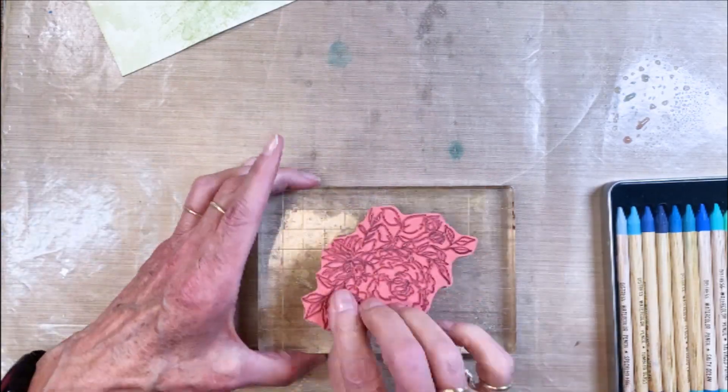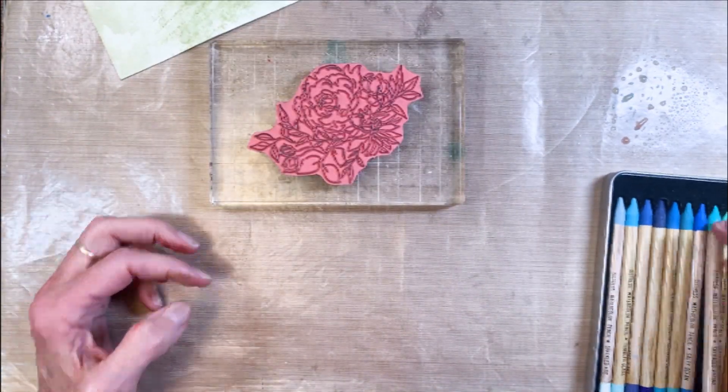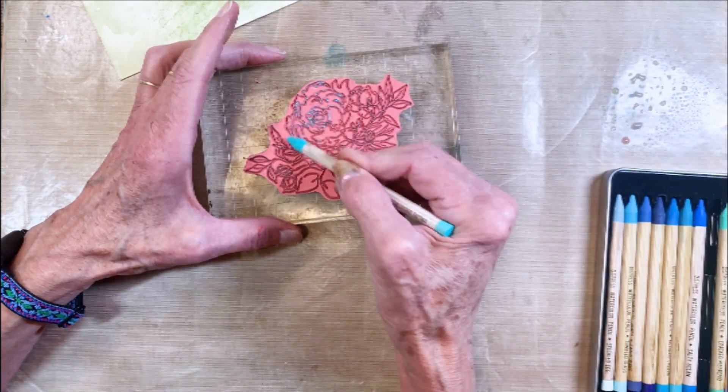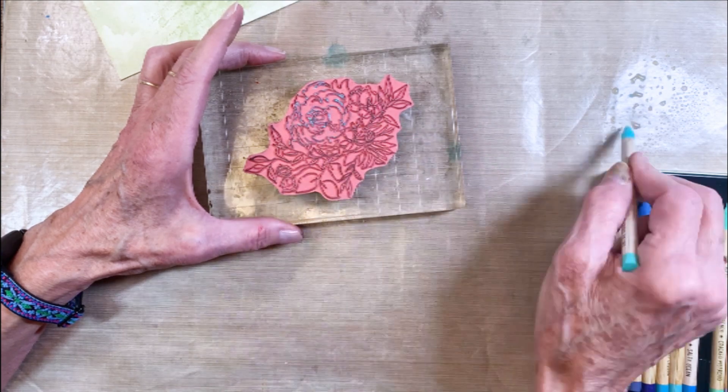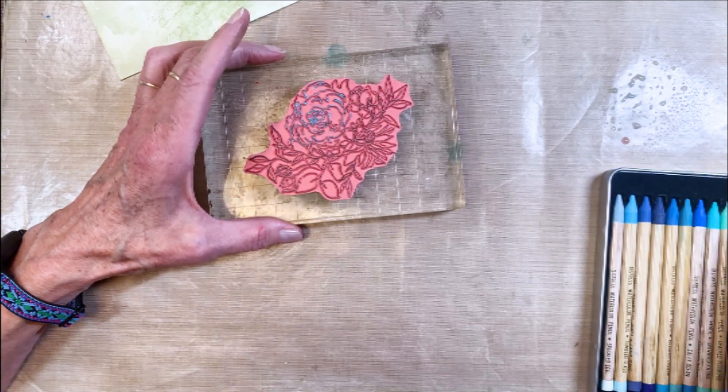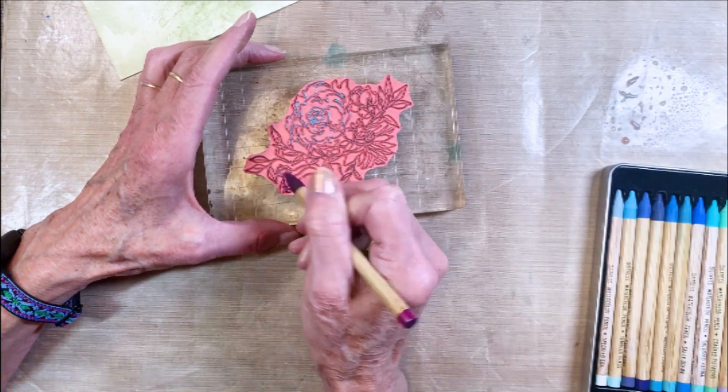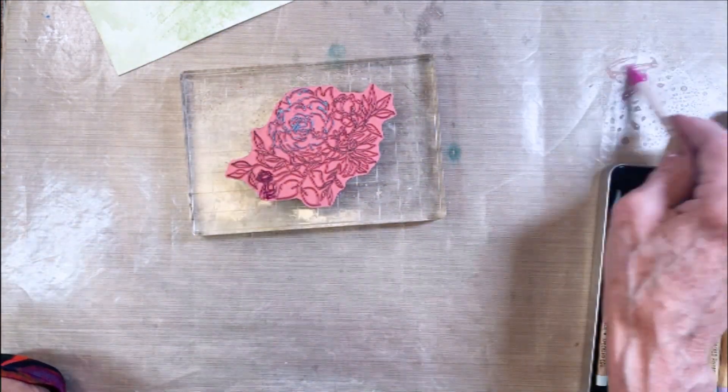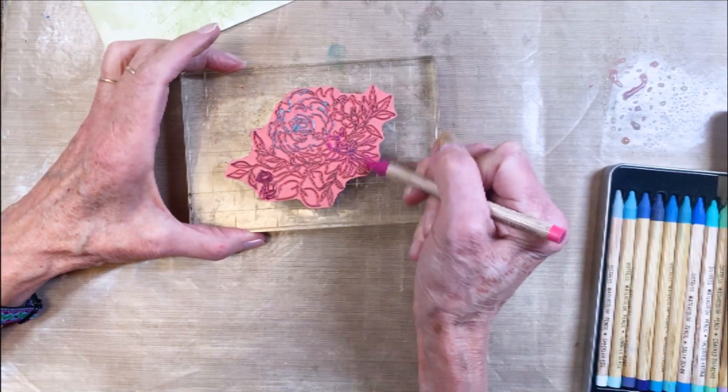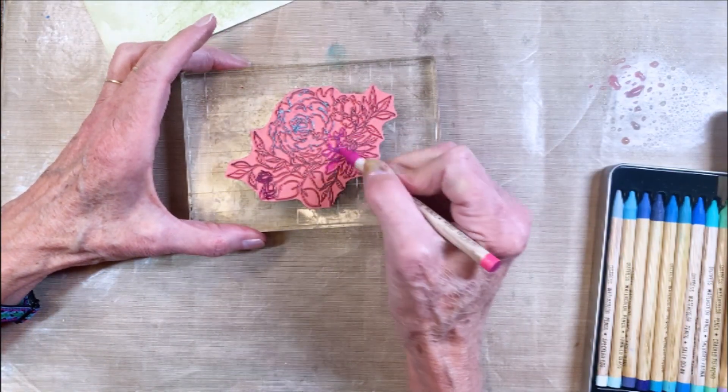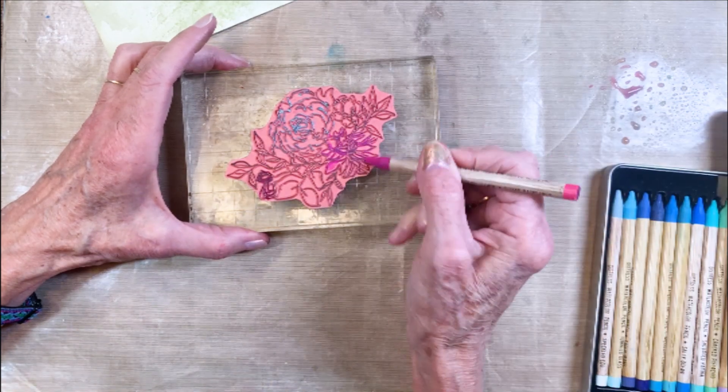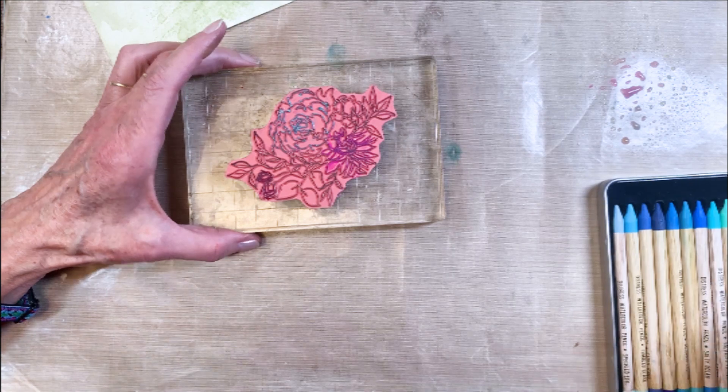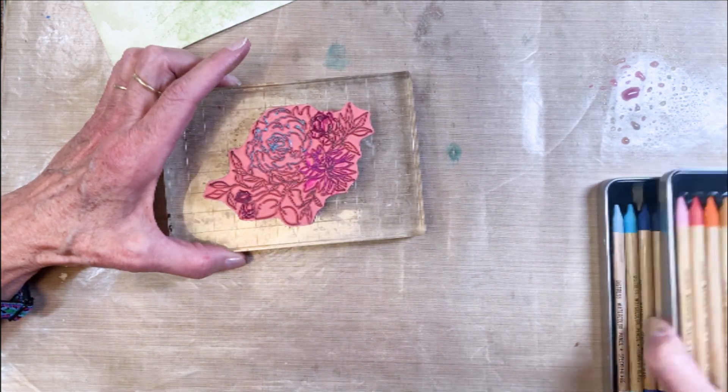The next thing I did is I grabbed the floral outline number 430 stamp from Stampers Anonymous. This is one of my favorite floral stamps. I'm using the new distress watercolor pencils, dipping them in the water and then coloring the outside of the floral lines.